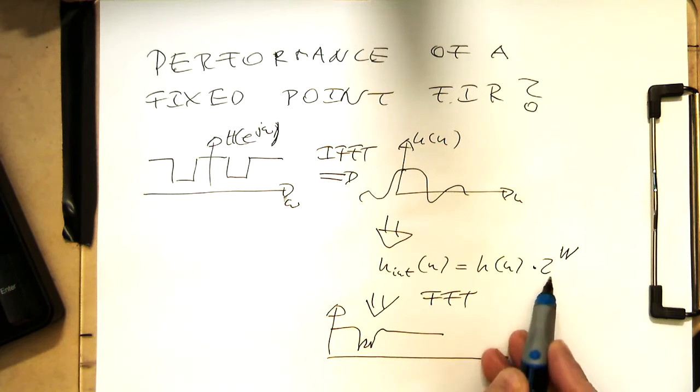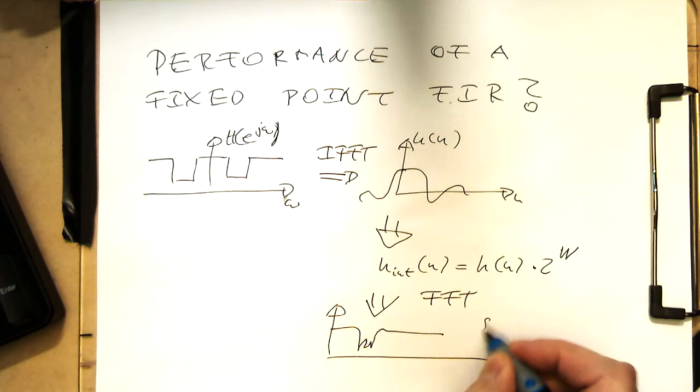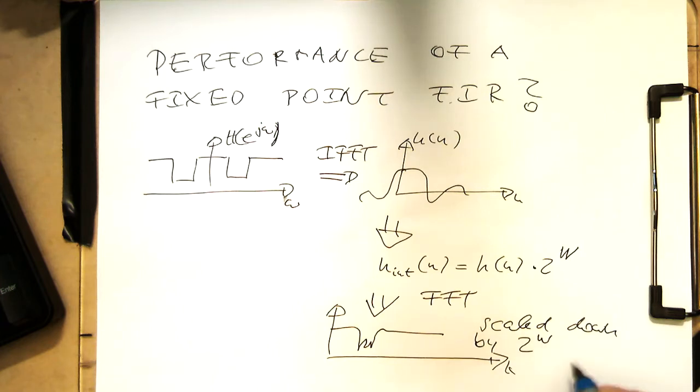Because this is here scaled by 2 to W, what we would do is here that we also then scale down this Fourier transform by 2 to W to be able to compare this with this one here. Scaled down by 2 to W again.